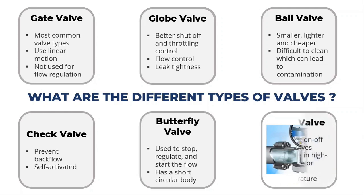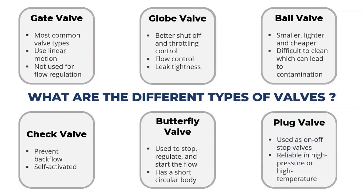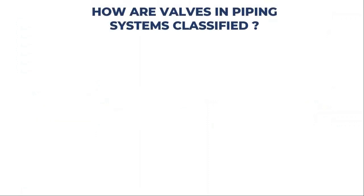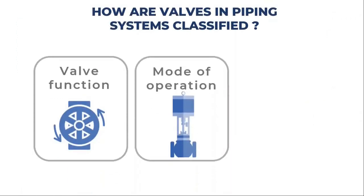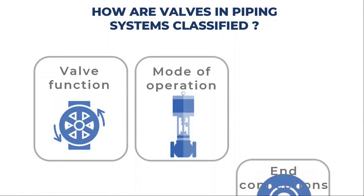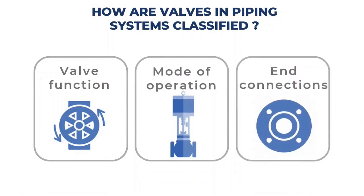A plug valve is a valve with a quarter turn rotary motion that controls flow by using a tapered or cylindrical plug. The disc is shaped like a plug and has a path for the flow to pass through. For applications involving high pressure or temperature, the plug valve can be used in a vacuum. These valves can be categorized or classified based on function, operation, and end connections. To make sure the valve is appropriate for the required use, it is crucial to take into account each of these categories when selecting a valve.